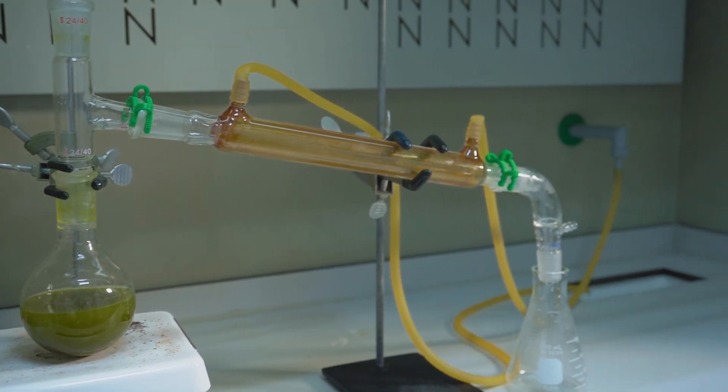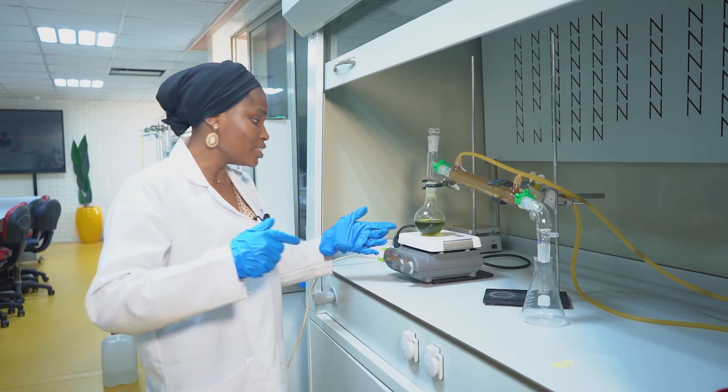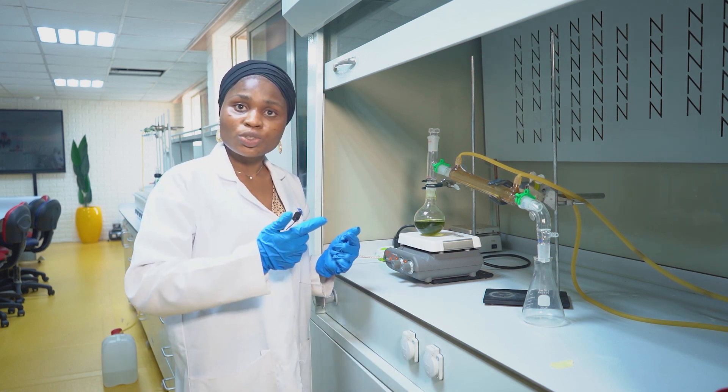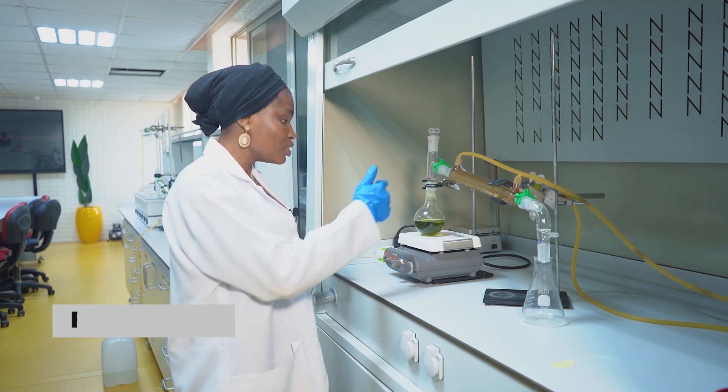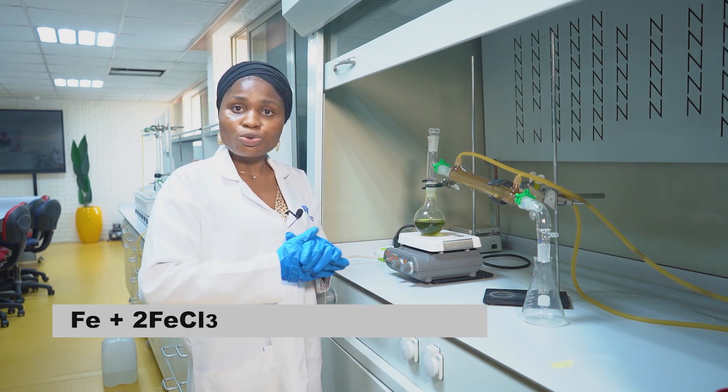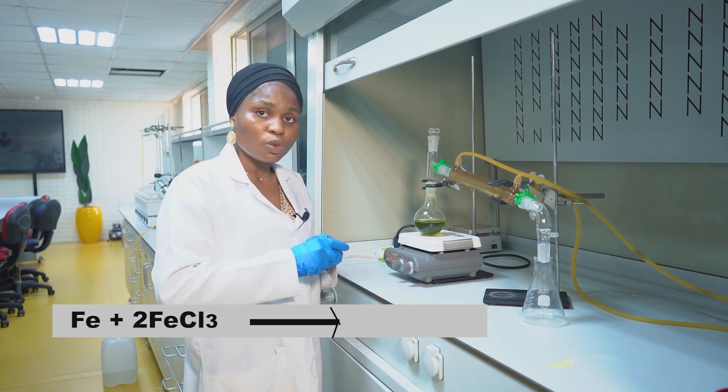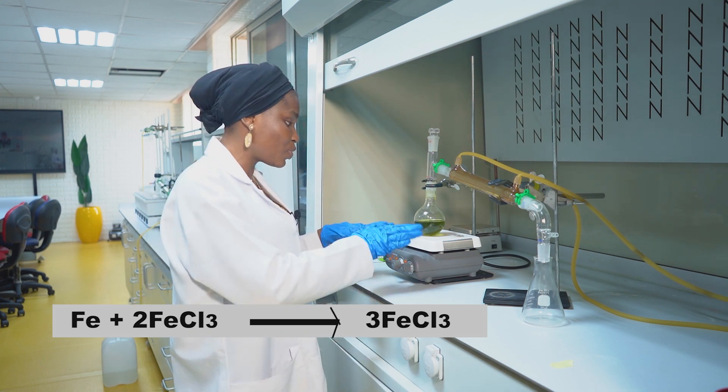So I'll explain what happens, the reason why I added the nails. Instead of getting ferric chloride, which is iron-3 chloride, the nails will undergo redox reaction to give us the iron-2 chloride, which is your ferrous chloride, and that's the final thing we need.